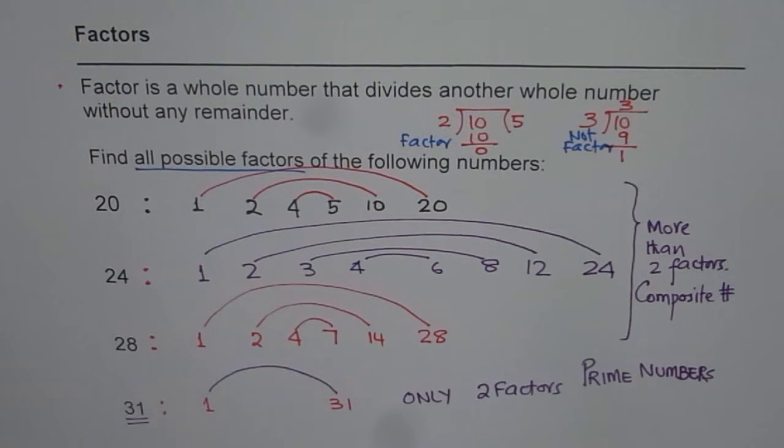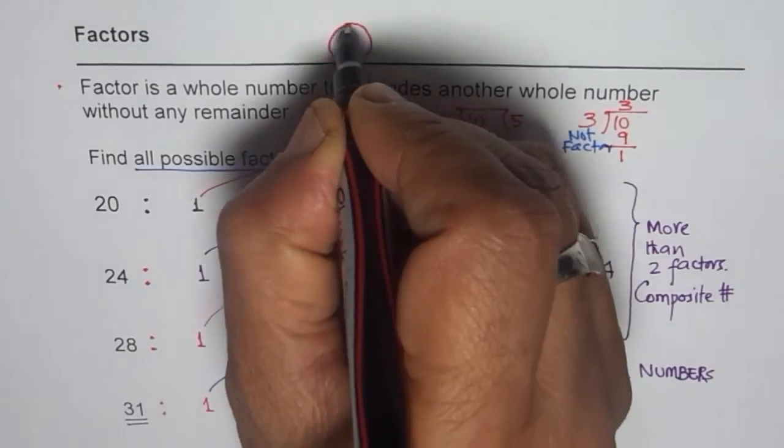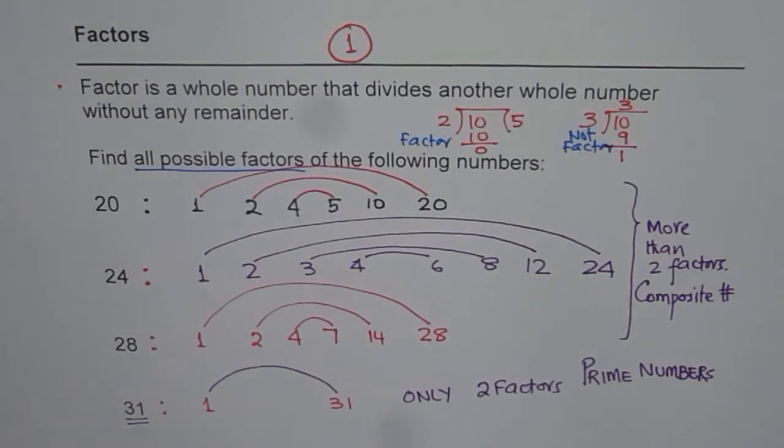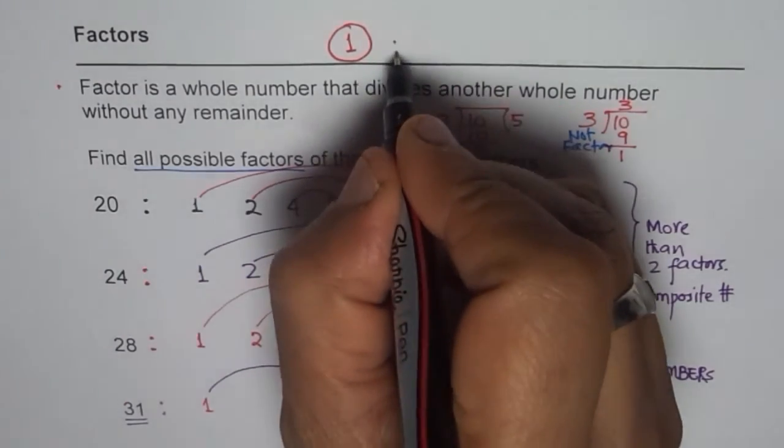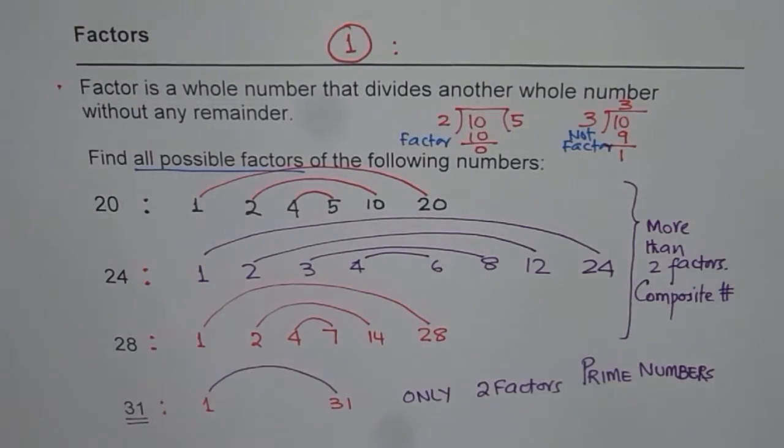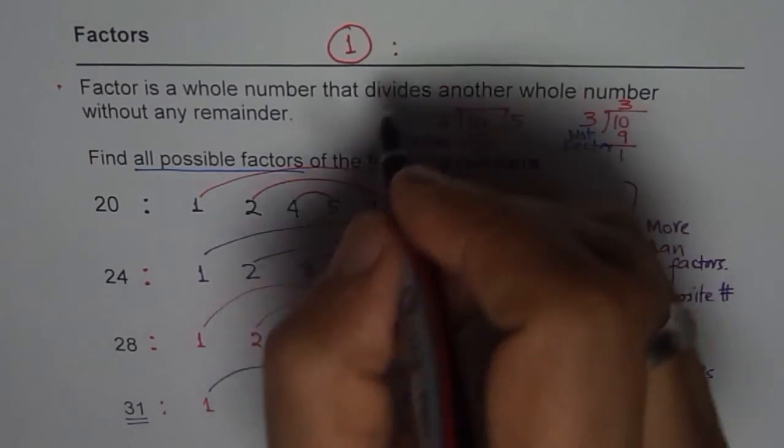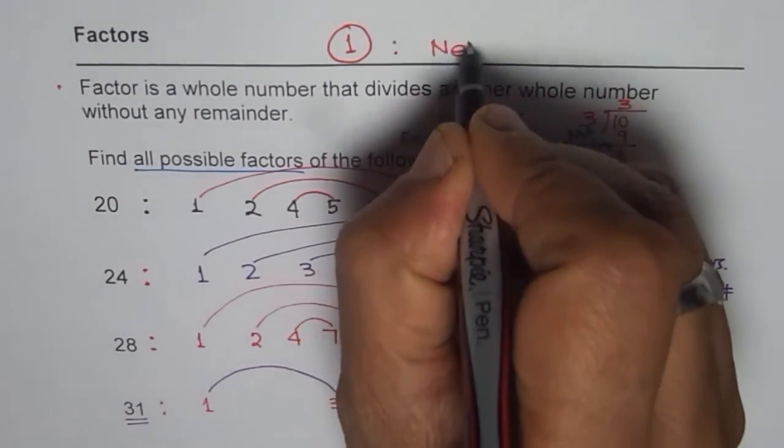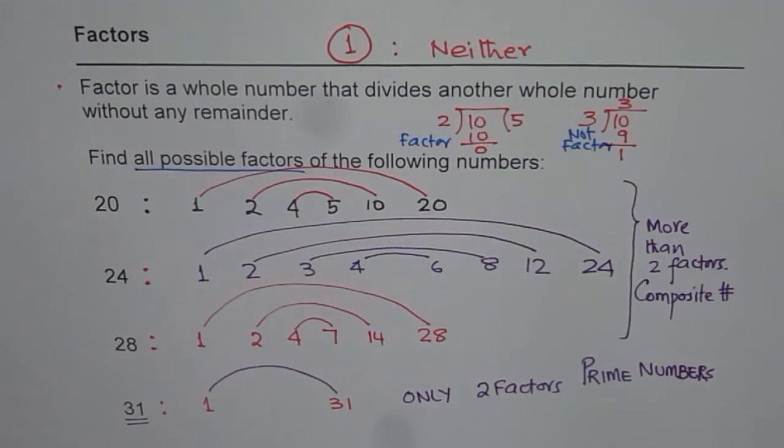Now the question for you is, how about the number 1? How will you categorize 1? Is it a prime number or a composite number? How many factors will 1 have? 1 times 1 is 1. It has only 1 factor. So it is neither. Remember that this is the most important question when we talk about prime numbers and composite numbers.